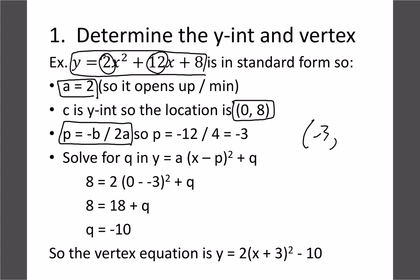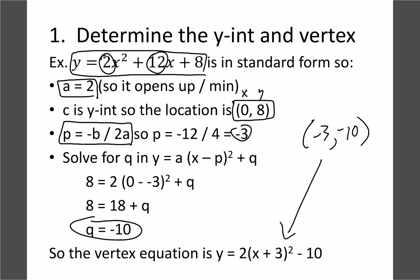So our vertex x-coordinate is negative 3. We just need to find q, so we plug everything into our equation using the y-intercept as our x and y coordinate. We put 8 in for y, 2 in for a, 0 in for x, and negative 3 in for p, then solve for q. Simplifying gives us q equals negative 10. We can now write the vertex formula with a = 2, p = -3, q = -10.